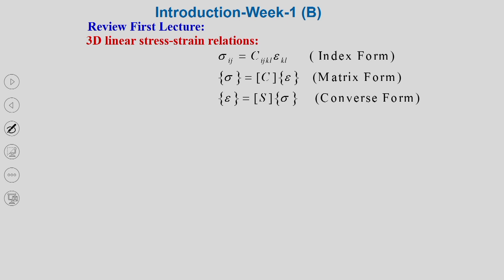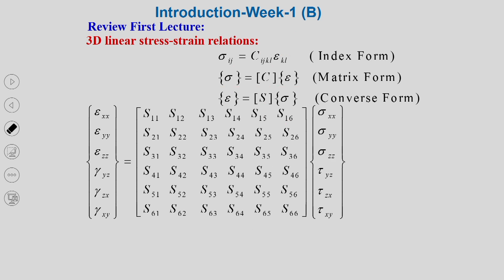Then I explained the linearized generalized Hooke's law, where sigma ij is a column vector — this is called the stiffness — and epsilon is also a column vector for strain. In matrix form it can be written as S, and if you want to find strain in terms of stresses, that is denoted by S and is called the compliance. Explicitly, the strain column vector can be represented as the S matrix times the stress matrix.